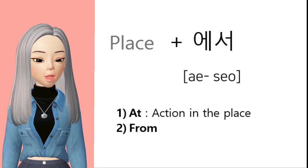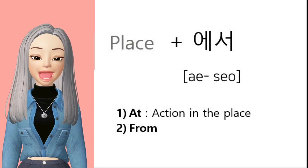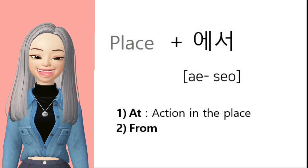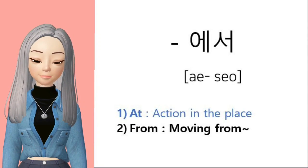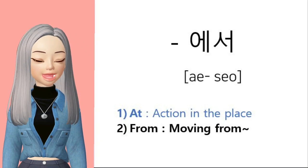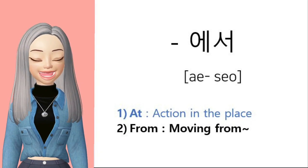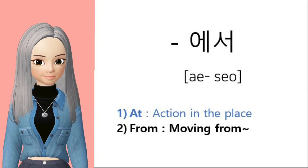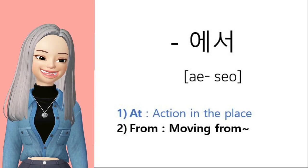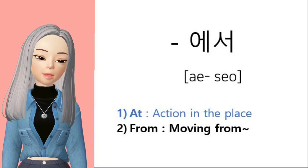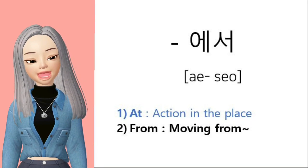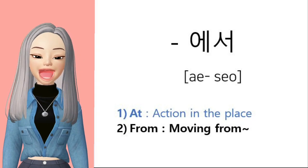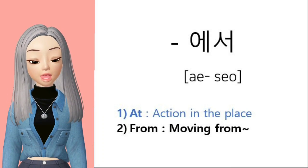Now we're going to look at the marker 에서. 에서 has two meanings. The first is 'at' and the second is 'from'. But 'at' here is different from the 'at' that we used for 에. Remember, for 에 it was when you're existing in the place. But for 에서, it's when you do the action in the place. So whether to use 에 or 에서 depends on the verb in the sentence.